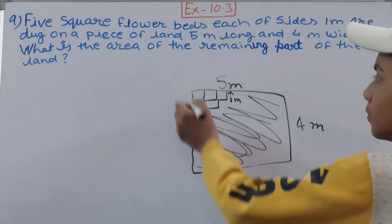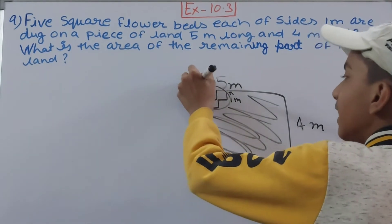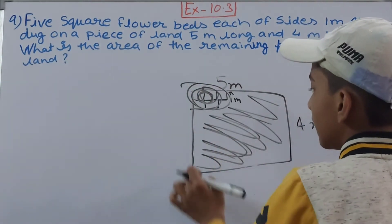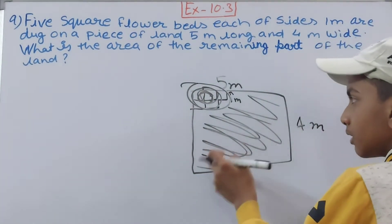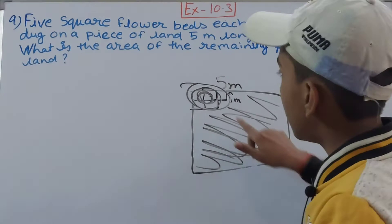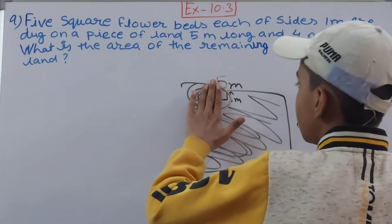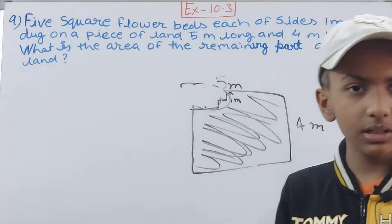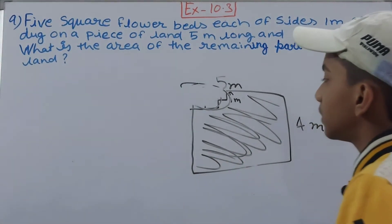First, we need to know the area of these flower beds. If we subtract the area of these flower beds from the total area of the land, then we can get this remaining area. If you will remove these flower beds, you can see that the area which is left will be your answer.